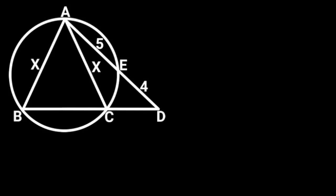In this figure, the triangle ABC is inscribed in the circle. The length of AE is 5 units and the length of ED is 4 units. If AB is equal to X and AC is also X, find the value of X. Note that this diagram is not drawn to scale.